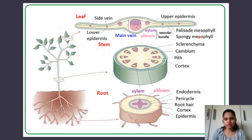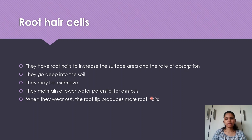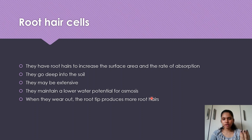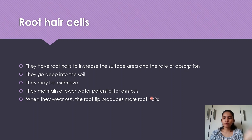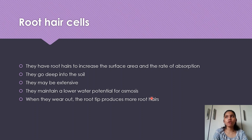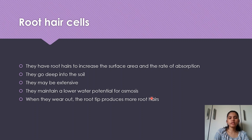Root hair cells have hair-like projections on the surface of the root that increase the rate of absorption by increasing surface area. This leads to a greater rate of osmosis, which is the movement of water molecules through a partially permeable membrane. Greater surface area means greater rate of absorption and osmosis. It also increases the rate of movement of ions by active transport.